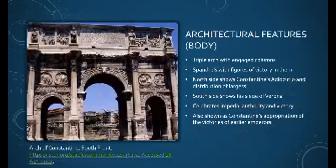Architectural features: a triple arch faced in marble, it has engaged columns resting on bases that depict captives. In the spandrels are figures of victory, while other personifications include the seasons and river gods. Friezes of Constantine's adlocutio and distribution of largesse appear on the north side. His siege of Verona and the battle at the Milvian Bridge appear on the south side. Like other Roman arches, this program celebrates imperial authority and victory, and has been read by Pierce as Constantine's appropriation of the achievements of earlier emperors.